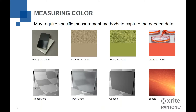Am I measuring something glossy versus something matte? Am I measuring something textured versus solid? Something bulky like carpet or fibers versus solid color? Am I measuring something liquid, something transparent or translucent, or opaque? Does it have effects and change color with angle? All of these things come into play and have to be considered, and the way we might measure any one of these is different from another, or affected greatly by the kind of instrument used.